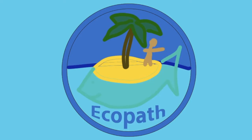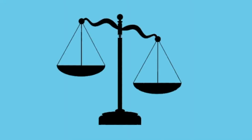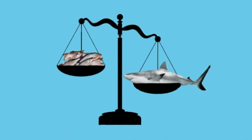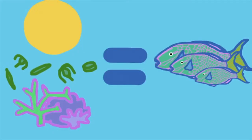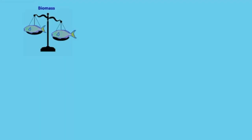Ecopath is a popular ecosystem model which offers a static mass-balance snapshot of an ecosystem. This means the energy that goes into the ecosystem must be equal to the energy that is produced. It does this by reducing the key species or functional groups to six simple parameters.